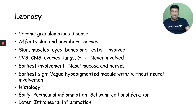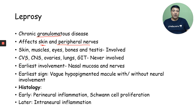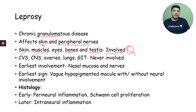Some important information about leprosy: leprosy is a chronic granulomatous disease that affects skin and peripheral nerves. The organs involved include skin, muscles, eyes, bones, and testes. The organs which are never involved in leprosy are the cardiovascular system, central nervous system, ovaries, lungs, and GIT.